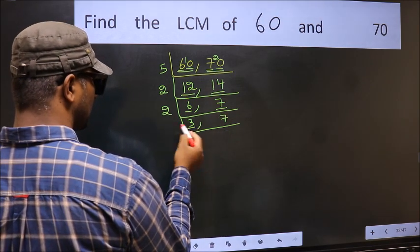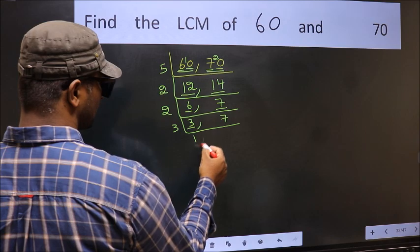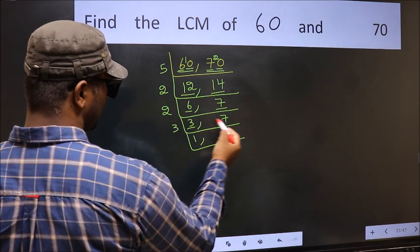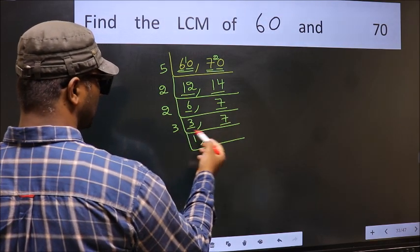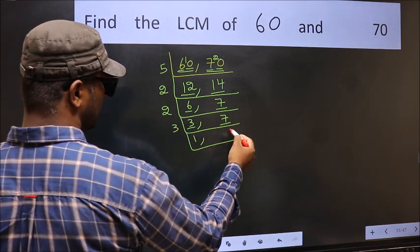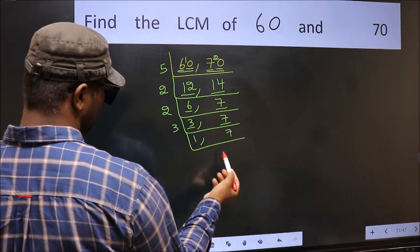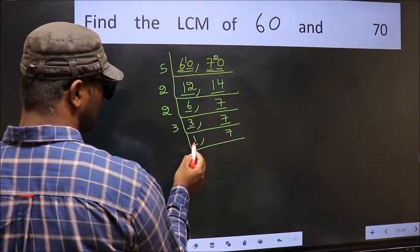Now here we have 3. 3 is a prime number, so 3 ones are 3. The other number, 7, is not divisible by 3, so you write it down as it is. Now we got 1 here.